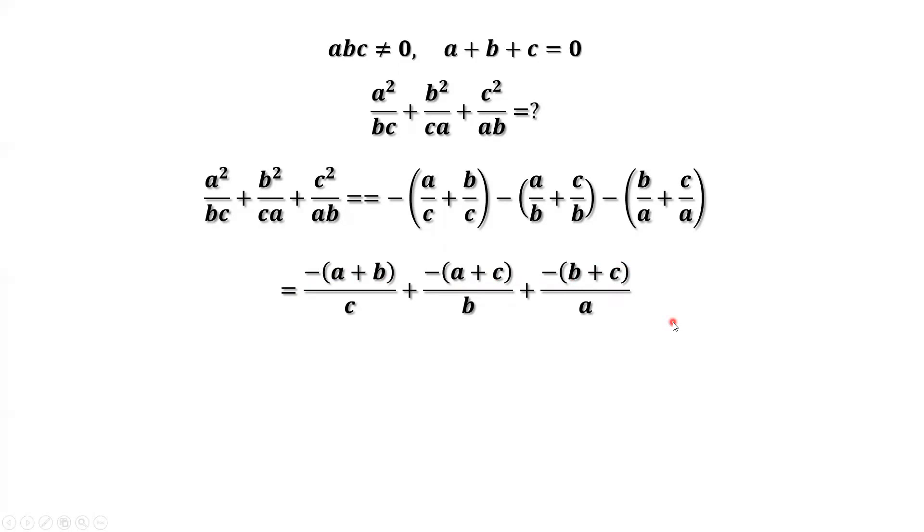We replace them back. So C, B, C. C, C cancel is one. B, B cancel is one. C, C cancel is one. So sum equals three. This is our answer.